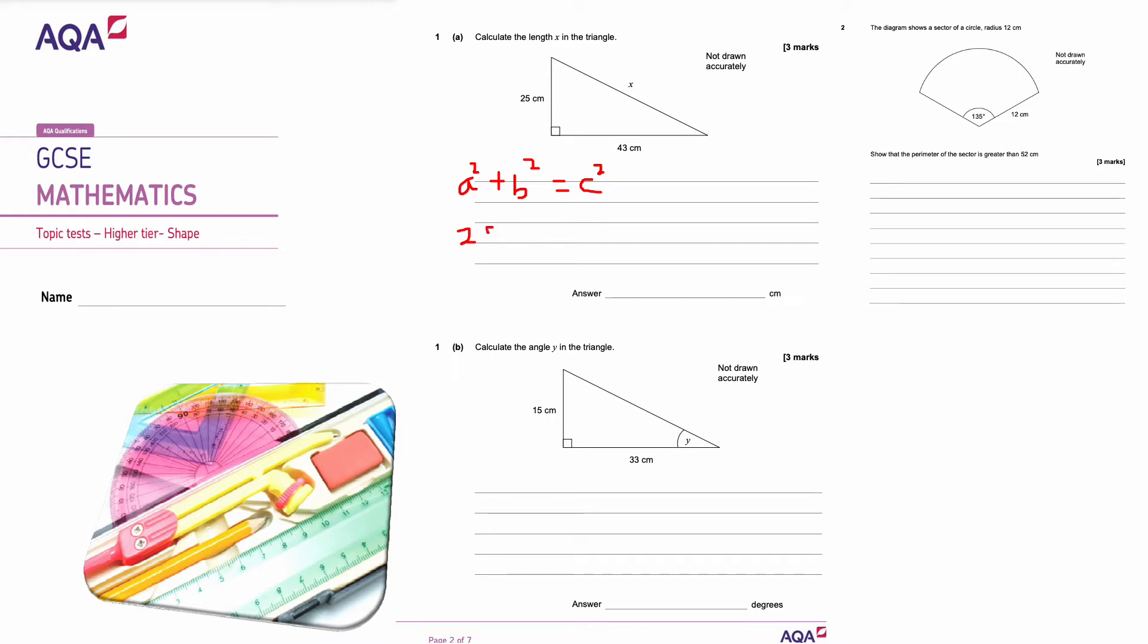I've got the two shorter sides, I square it and it has to equal the longest side which is what I call my hypotenuse. So X here is my C and A and B are my values here. So I've got 25 squared plus 43 squared has to equal X squared by definition.